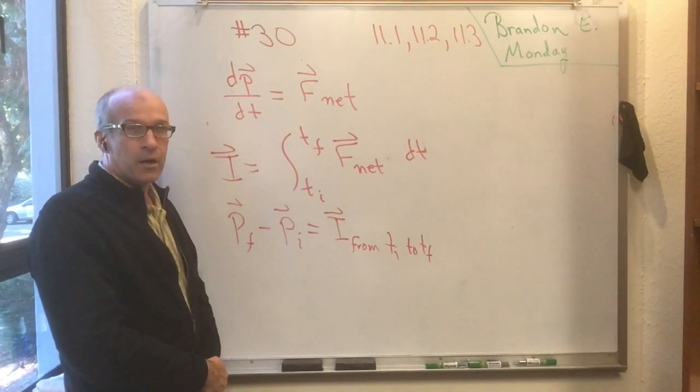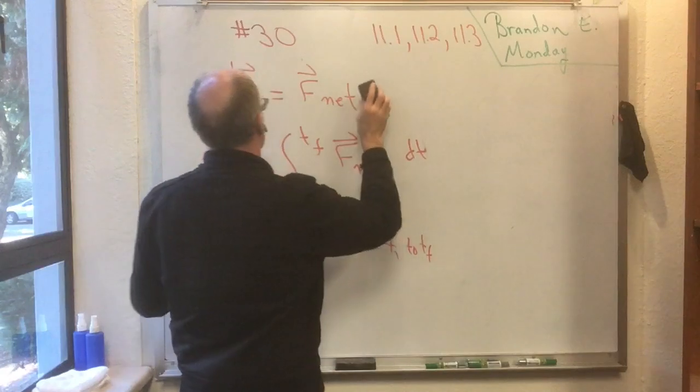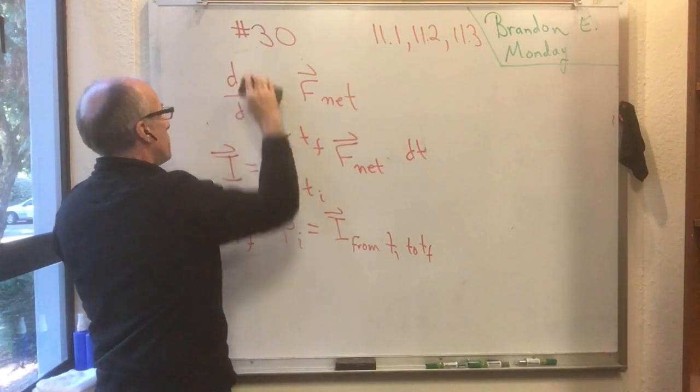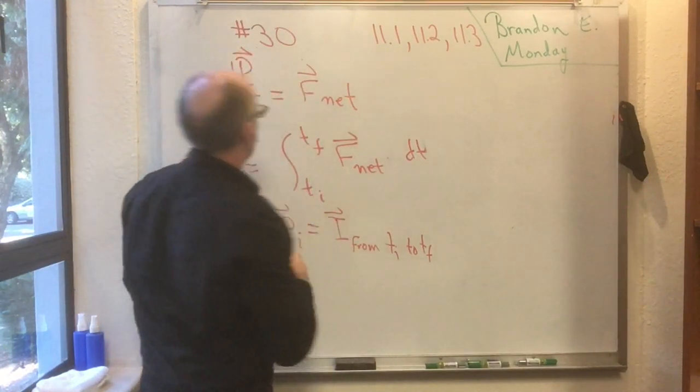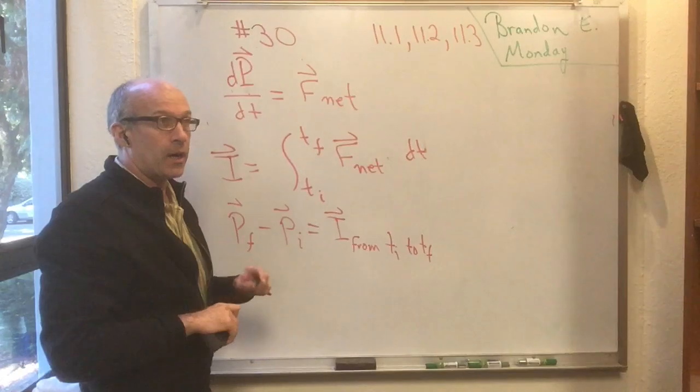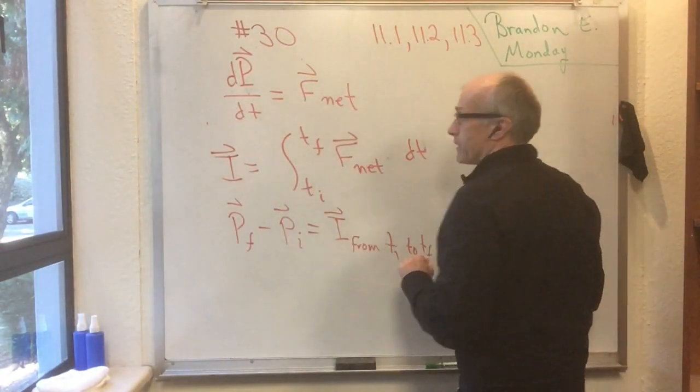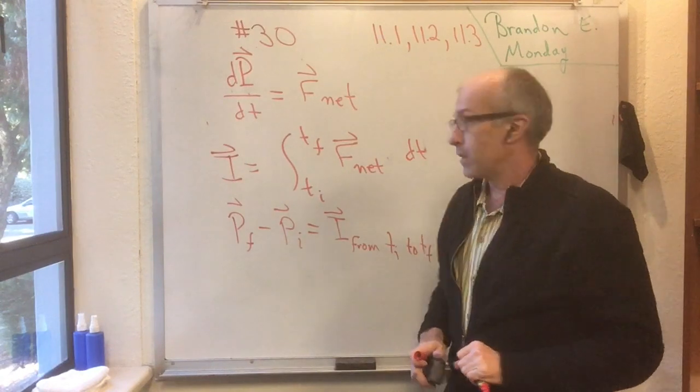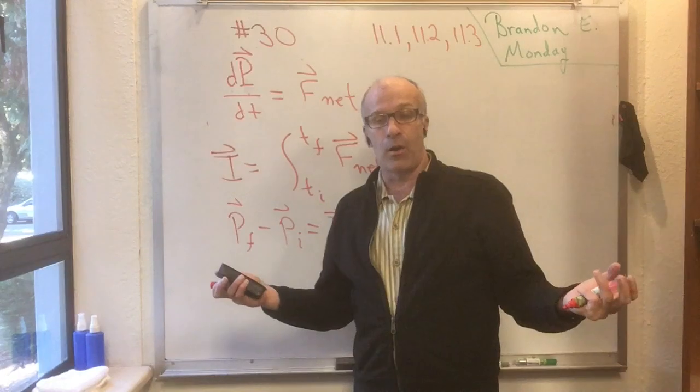Now let me show you how these equations change when we have a system of capital M particles. When you have a system of capital M particles, the only thing that changes here is that instead of little p, on the left-hand side, you have big P. On the right-hand side, you'll still have F_net, but F_net has to be interpreted a little bit differently.